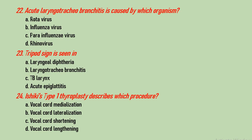Question number 24: Isshiki type 1 thyroplasty describes which procedure? Options are vocal cord medialization, vocal cord lateralization, vocal cord shortening, and vocal cord lengthening. The correct answer is vocal cord medialization. Lateralization, shortening, and lengthening are types 2, 3, and 4 respectively.